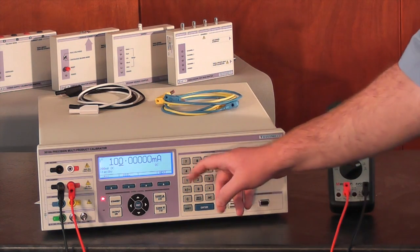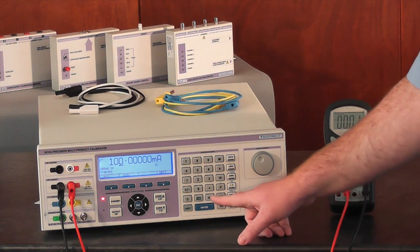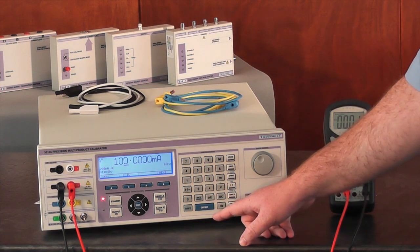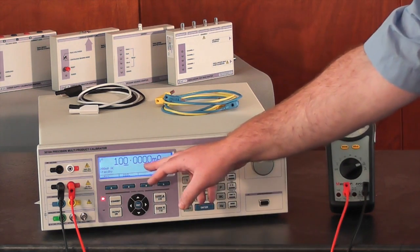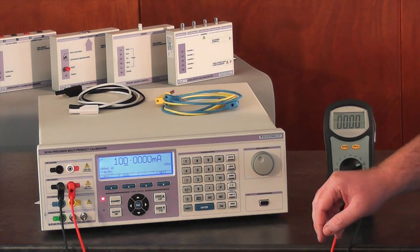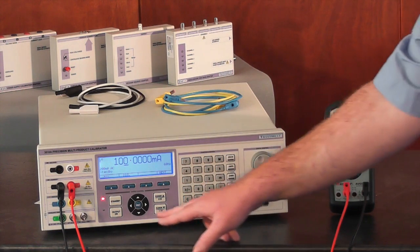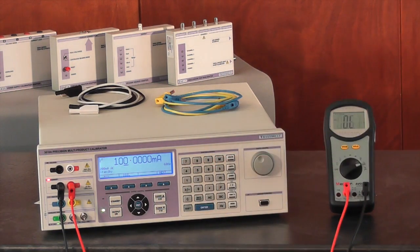To switch the 3000 series calibrator into AC mode, simply press the AC key. The last value is carried across. We already have a setting of 100 milliamps. We will be testing at 60 hertz, so we press the output on and verify the measurement on the multimeter.